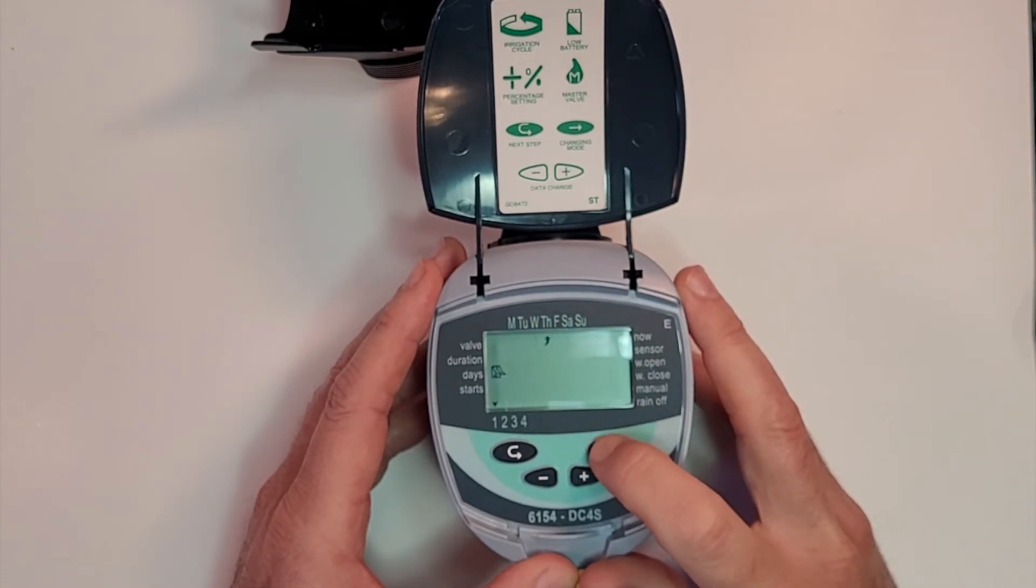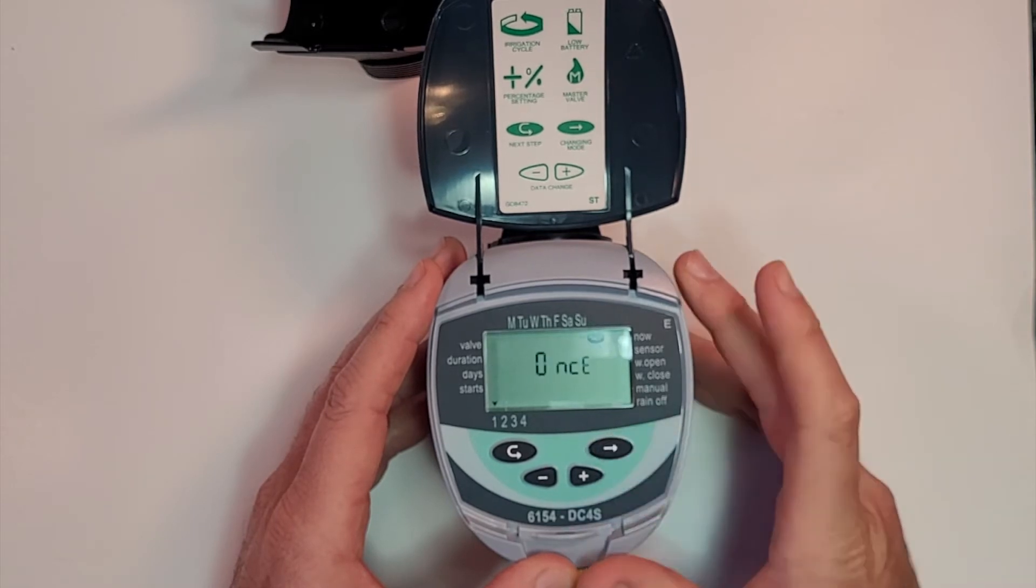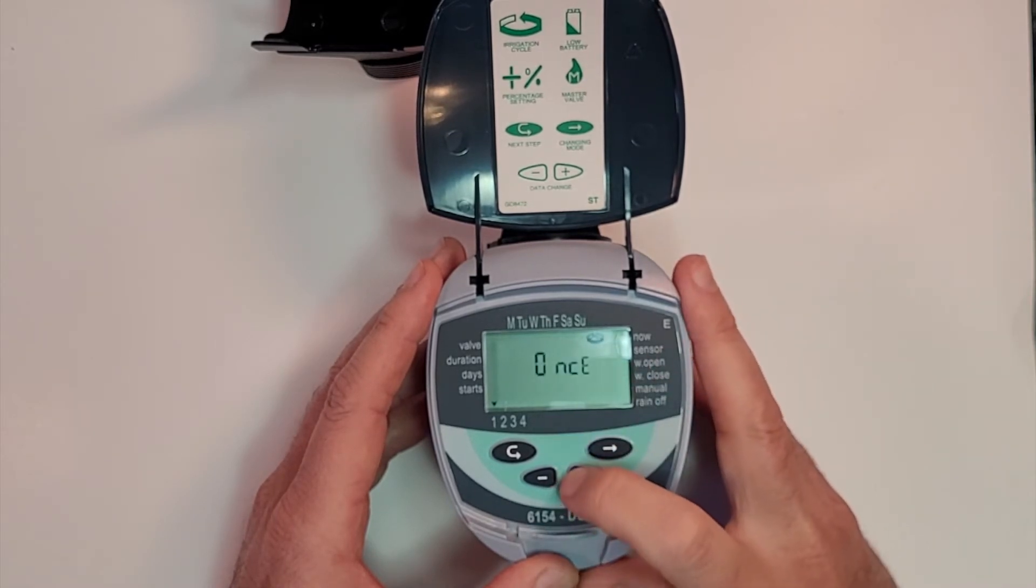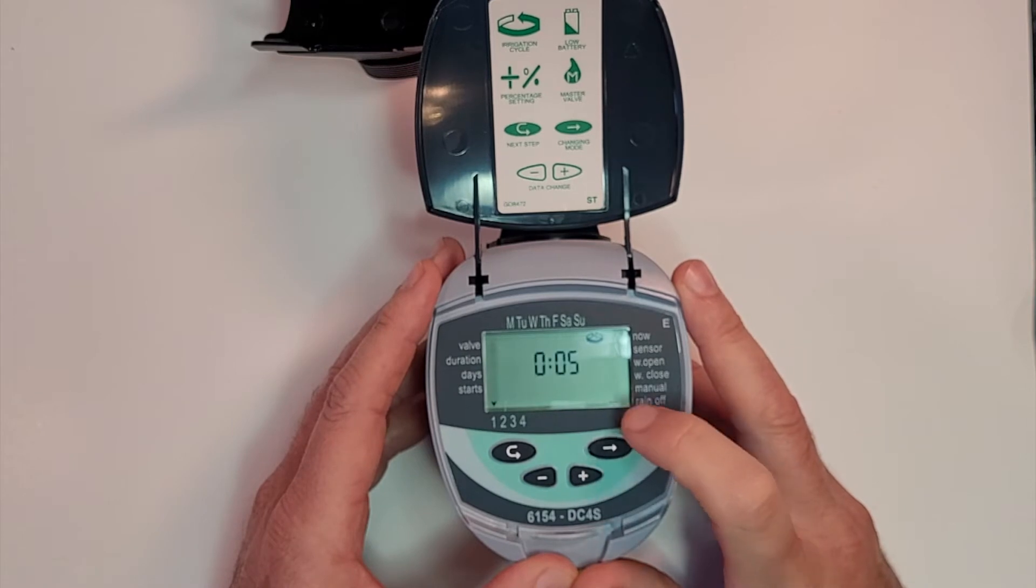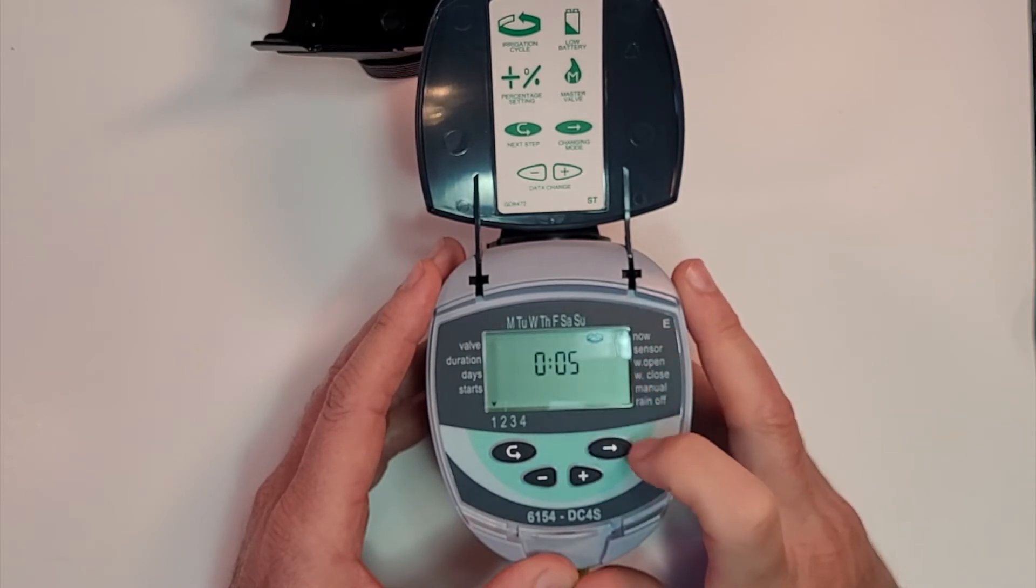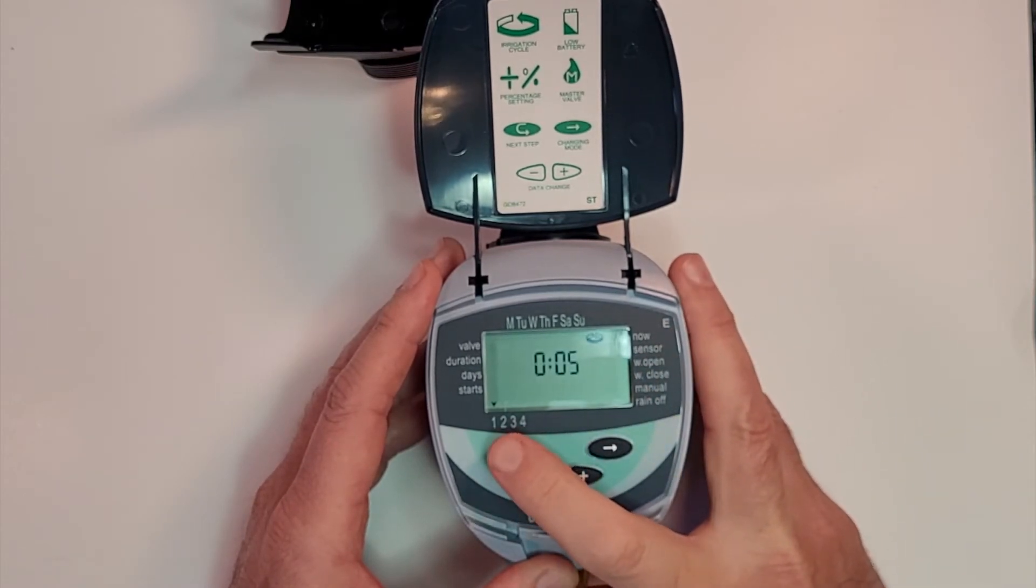We want to set it for cyclical, so we're going to keep pressing the right button until we get to once. We don't want to do it once, we want to set this unit to run every five minutes. So now the unit will run every five minutes for 10 seconds.